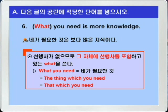여기 what은 타동사 need의 목적에 해당하는 목적격 관계대명사 what이 되겠습니다. 그럼 정답을 다시 한 번 더 확인해보고 7번으로 가겠습니다.